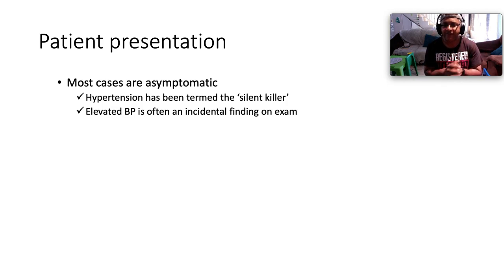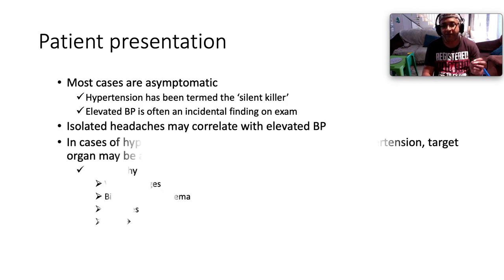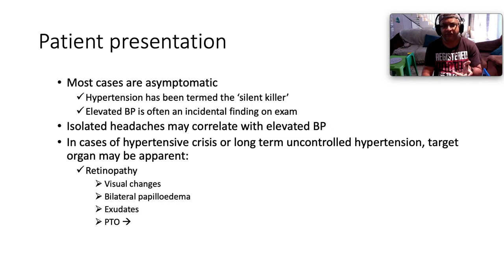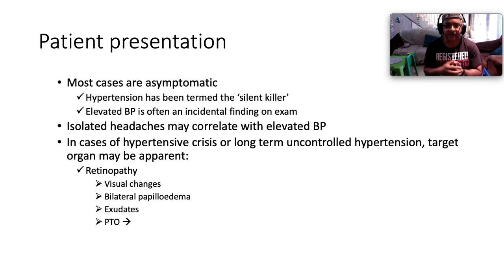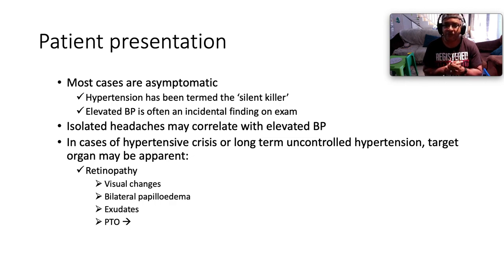Hypertension has been dubbed the silent killer because most cases are asymptomatic — elevated blood pressure is often just an incidental finding. Isolated headaches may correlate with elevated blood pressure. In hypertensive crisis or long-term uncontrolled hypertension, target organ damage may manifest. Thinking brain, eyes, heart, kidneys — in the eyes we have retinopathy. The four Keith-Wagener grades of hypertensive retinopathy are: grade 1 silver wiring, grade 2 arteriovenous nipping, grade 3 flame-shaped hemorrhages and cotton-wool spots, and grade 4 the above plus papilledema.